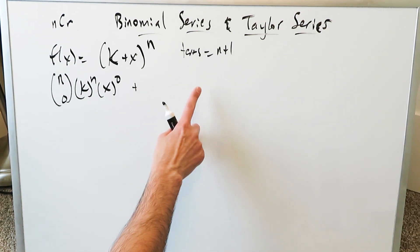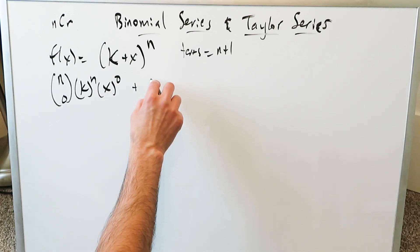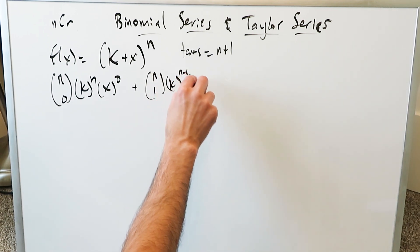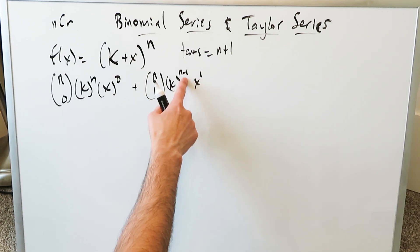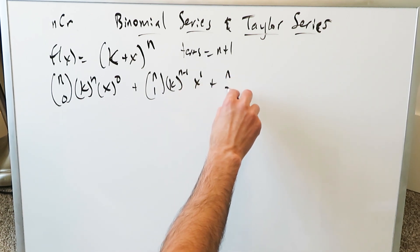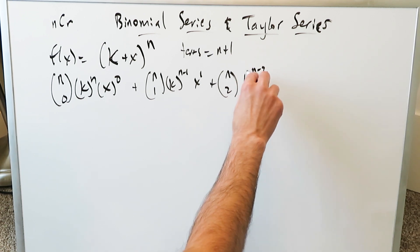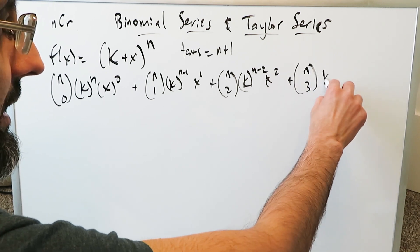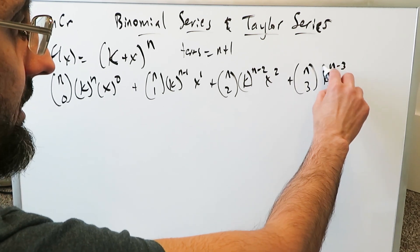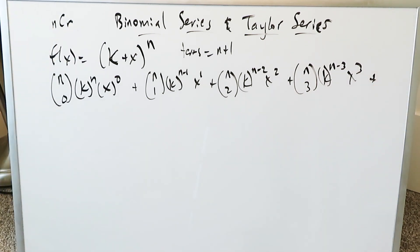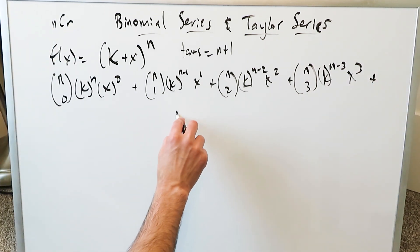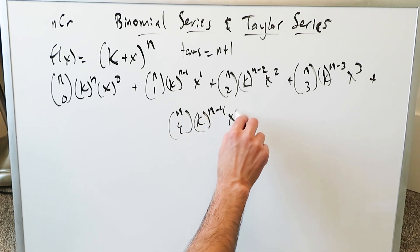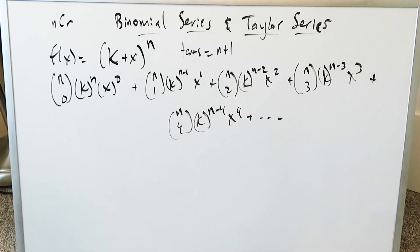I'm only going to expand up to 4 or 5 terms for both cases. The terms are: nC0 · k^n · x^0, then nC1 · k^(n−1) · x^1, then nC2 · k^(n−2) · x^2, then nC3 · k^(n−3) · x^3, and nC4 · k^(n−4) · x^4. You could keep going, but I'll stop there.